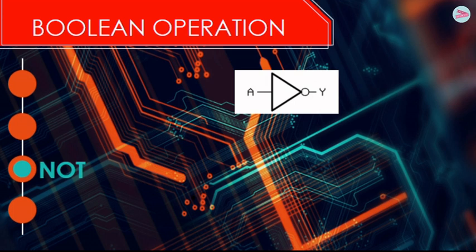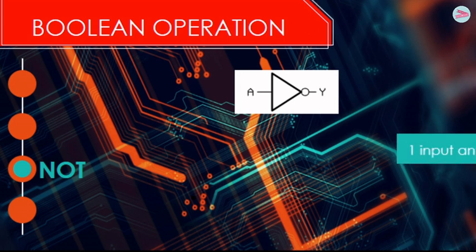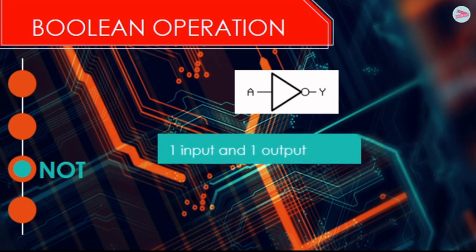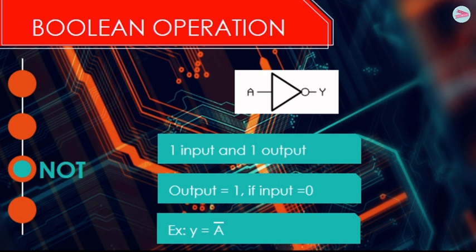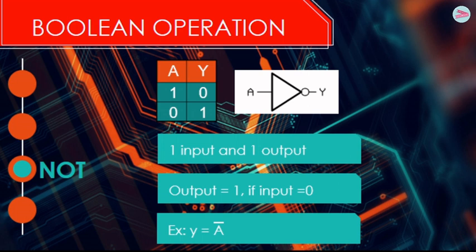The third Boolean operation is NOT. NOT has only one input and one output. The output will be equal to one if input equal to zero and vice versa. For example, Y equal to NOT A or Y equal to A NOT. This is the truth table of NOT Boolean operation.